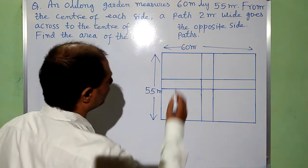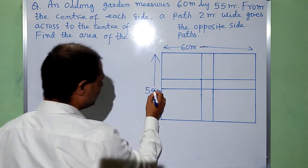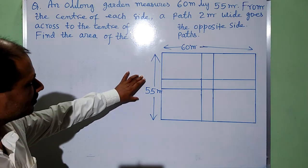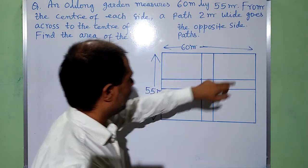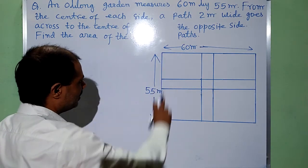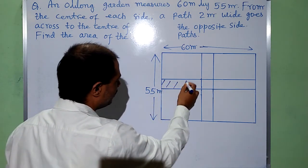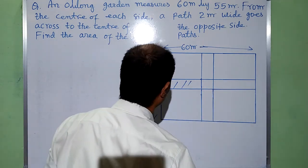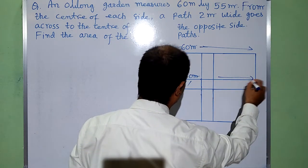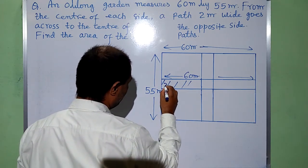This is the garden. Its length is 60 meter and breadth is 55 meter. One path is parallel to length, which passes through center of breadth. This is the breadth, and this is the road, this is the path. Its length is 60 meter. Width is given, that is 2 meter.